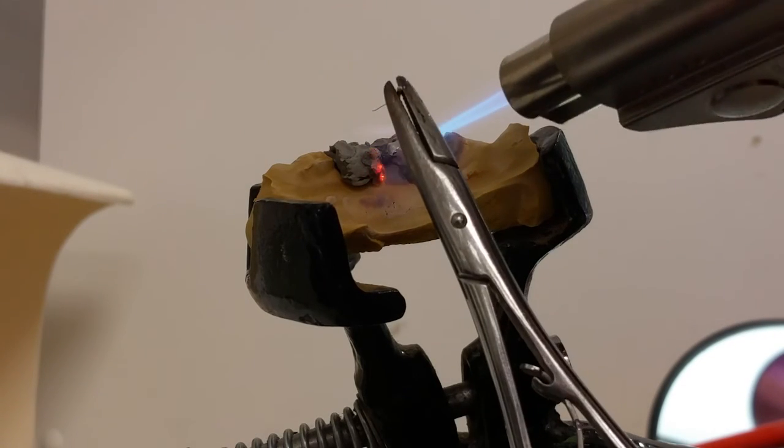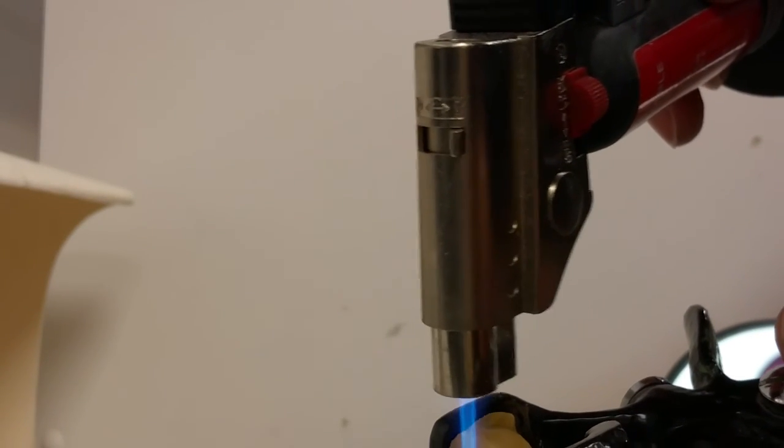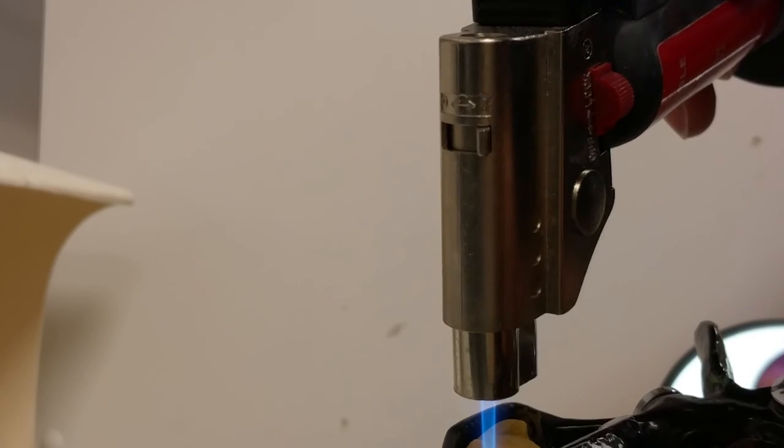Sometimes if it relaxes too much and goes too close to the gingiva, you'll see I'll flip this thing upside down. I'll use gravity to my advantage, heat up the solder again, let it relax, and go toward the occlusal. That way there's not impinging gums and stuff.